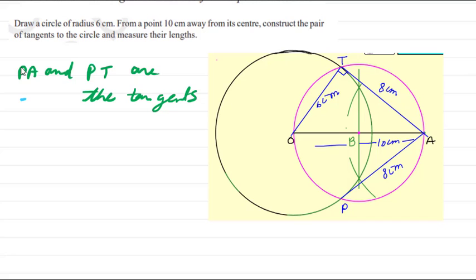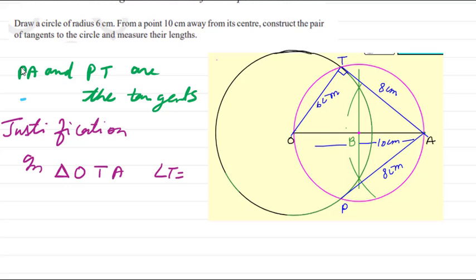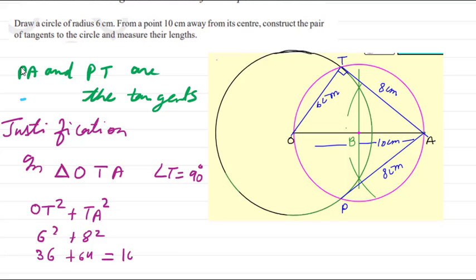Now we will write the proof and justification. In triangle OTA, angle T is 90 degrees — because the angle in a semicircle is 90 degrees. So OT squared plus TA squared equals 6 squared plus 8 squared, which is 36 plus 64, giving 100. That equals 10 squared, which is the same as OA squared. By the Pythagoras theorem, our construction is correct. This is the justification.